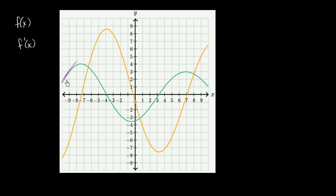If this orange function were f prime of x — if it were the derivative of the green function — then it would have to be positive, because the green function's slope is positive at that point. But we see that it's not positive. So it's pretty clear that the green function cannot be f of x and the yellow function cannot be its derivative, because if this was its derivative, it would be positive here. So that quickly we found out that that can't be the case.